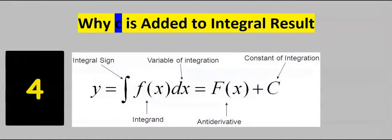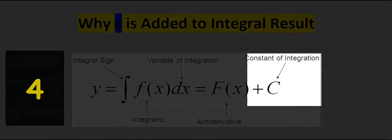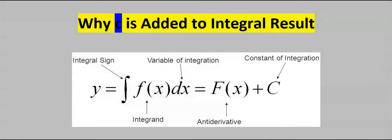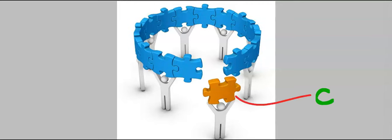Next, why C is added to the integral result. Only one C must be added at the end of an integral result. The C simply means constant — this is the missing link discarded in differentiation.